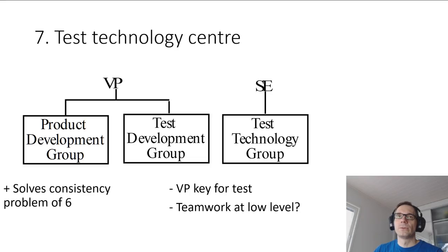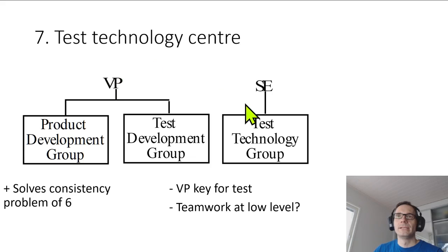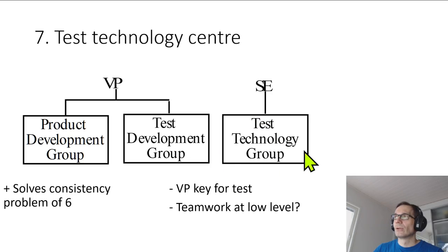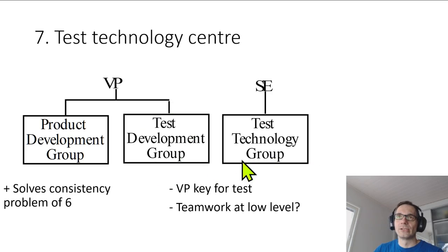In the seventh approach according to the Kitt book, you still have a product development group and test development group under the vice president, but then you have a separate test technology group that supports the test development group. The purpose of this group is to ensure that the technologies used in the company are correct and to support with tools, while the other groups perform the actual testing and utilize the technology provided by this test technology center.